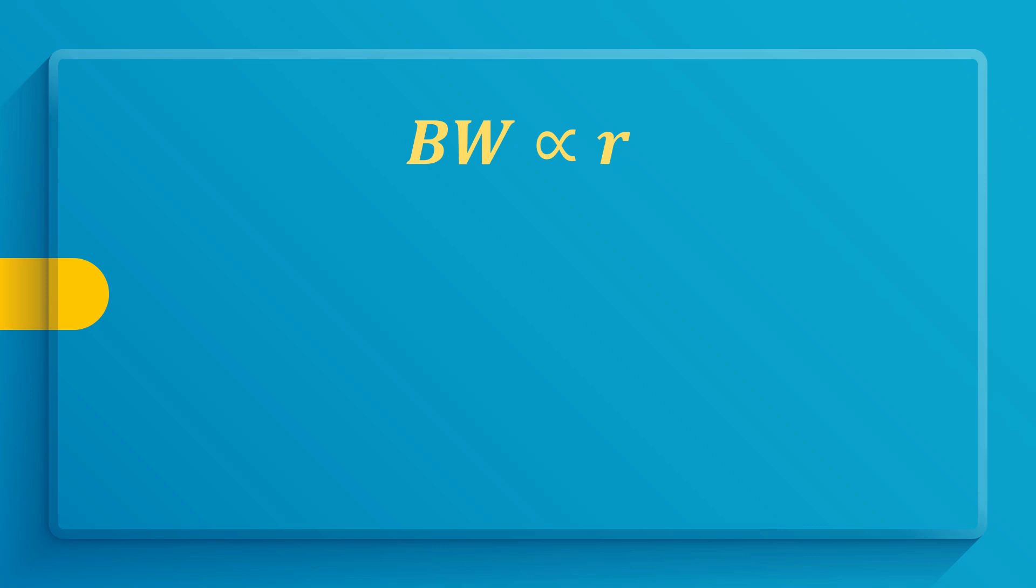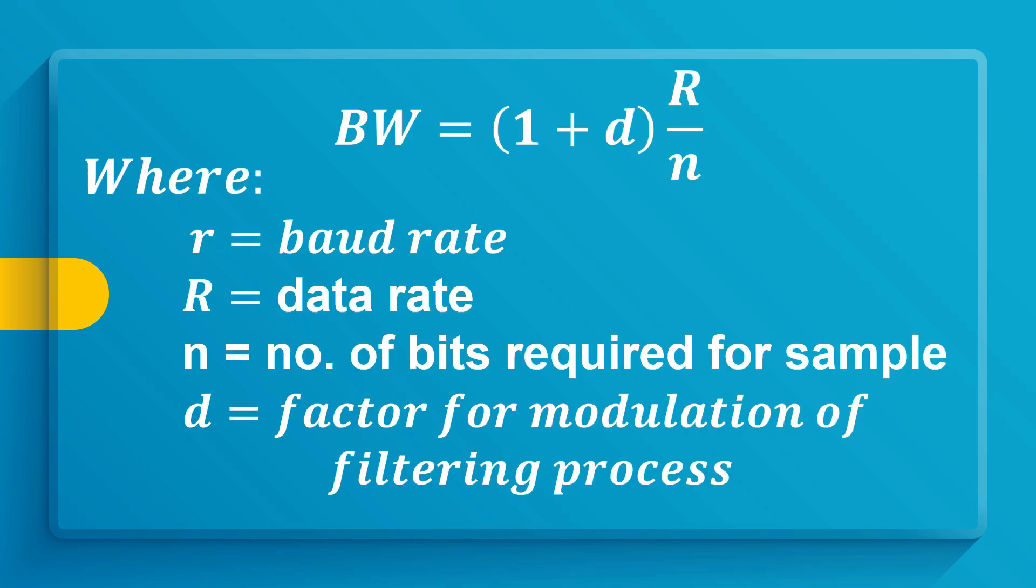And the proportionality constant is 1 plus d. So bandwidth equals (1 + d) multiplied by r. Also, r equals R over n. So bandwidth equals (1 + d) quantity R over n. Now, for our final formula, bandwidth equals (1 + d) quantity R over n.